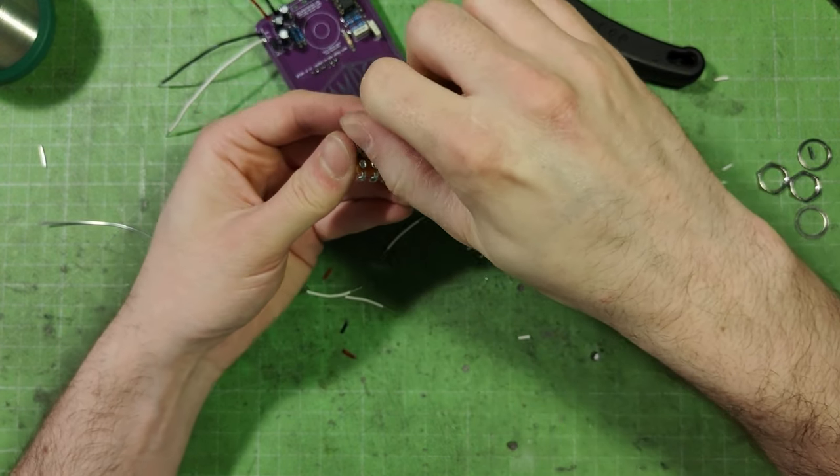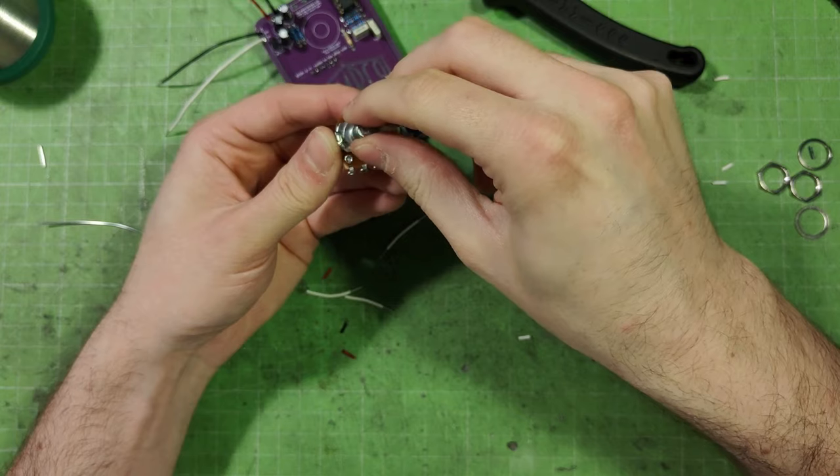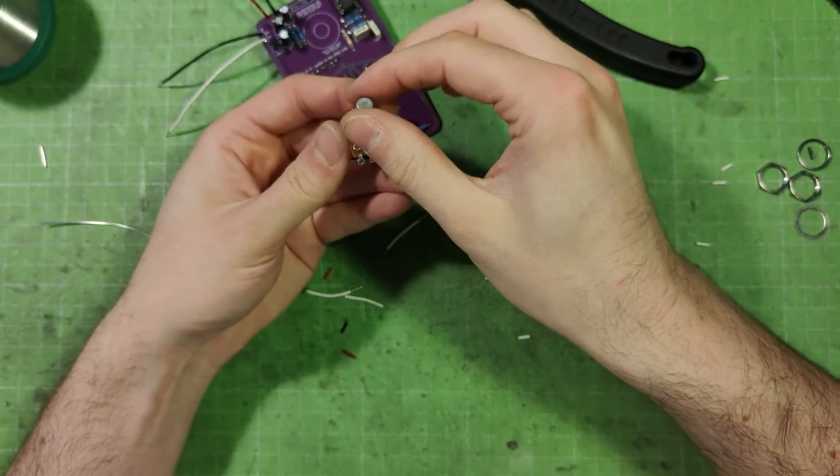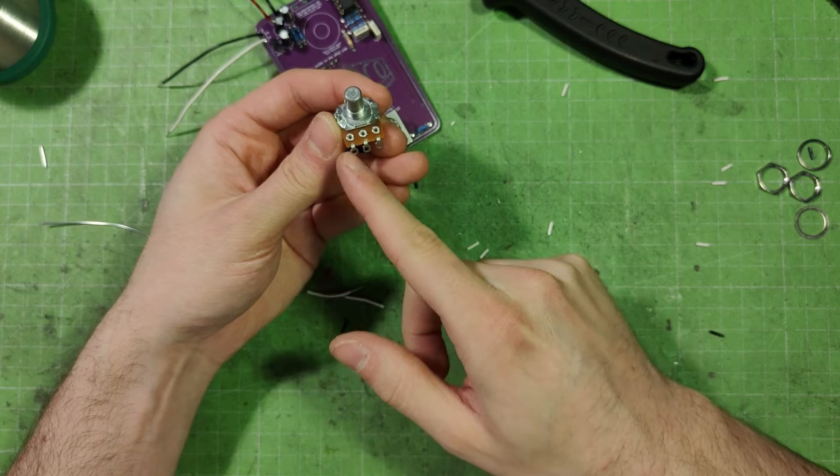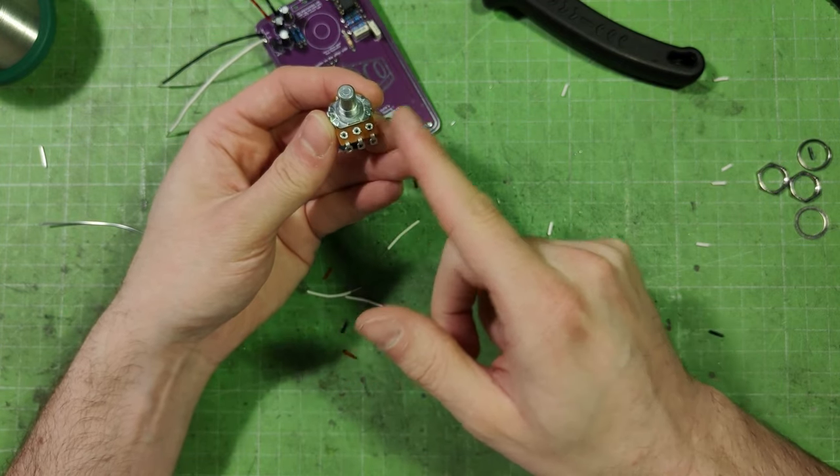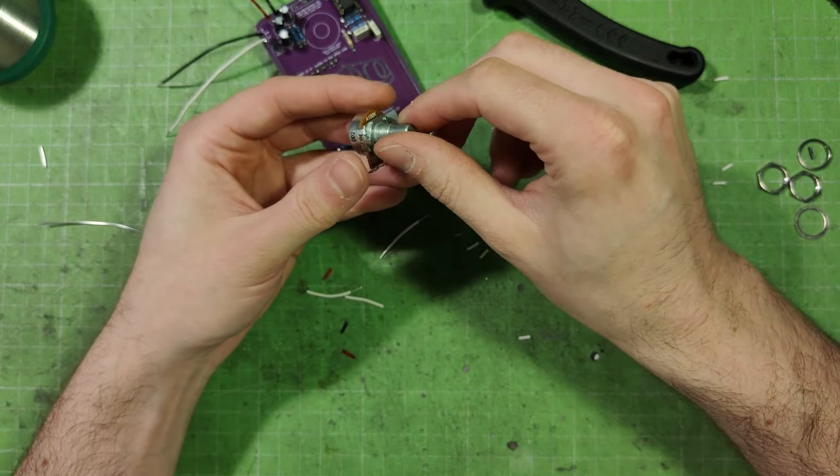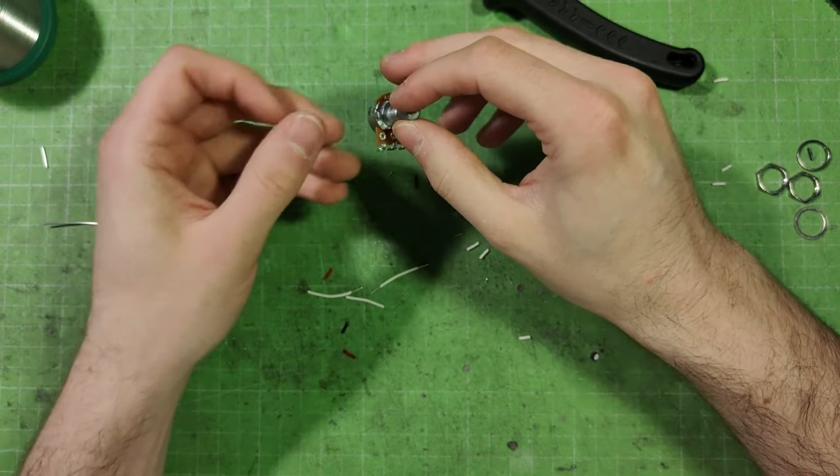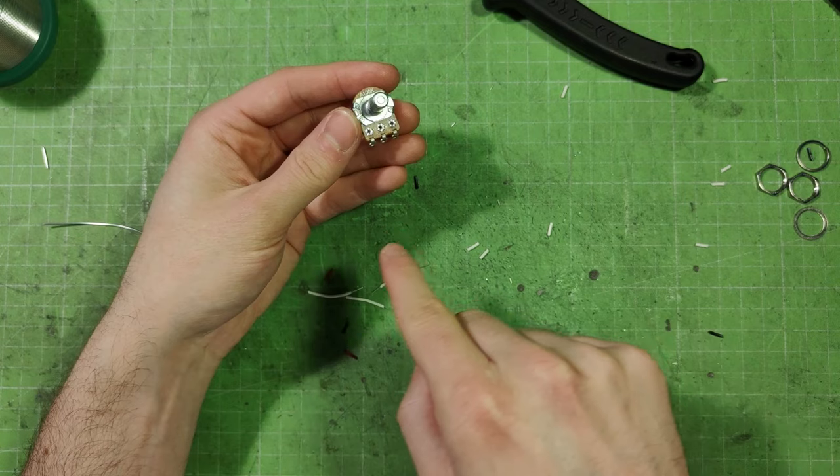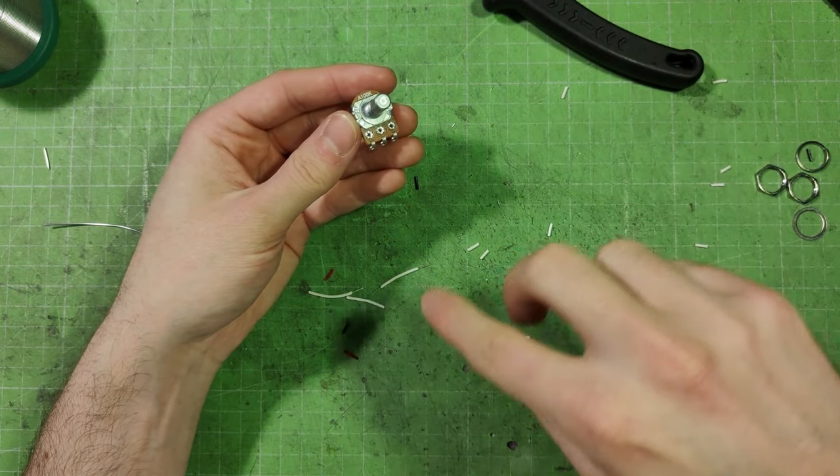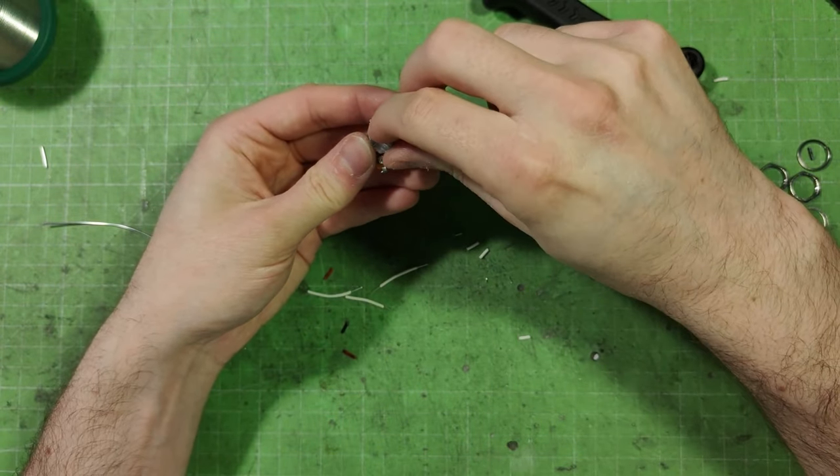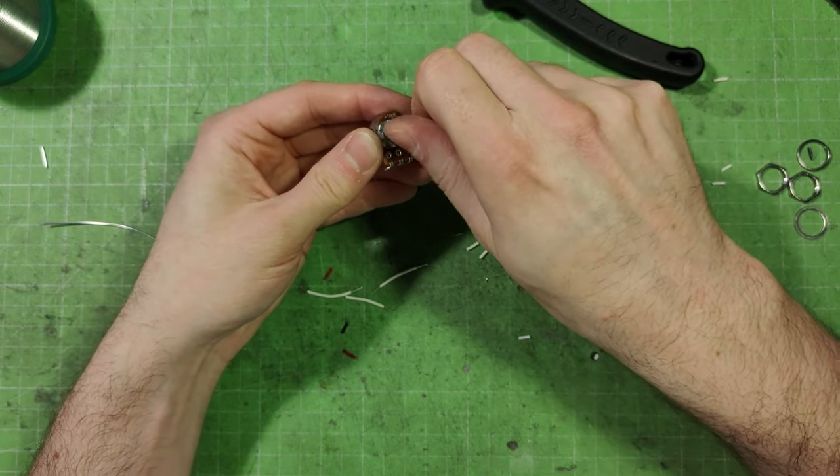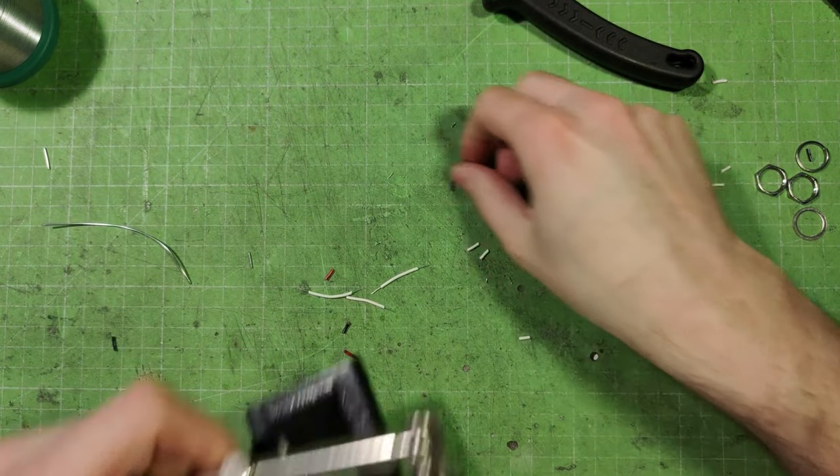If it's linear, the pot is written B 100k. In that case, at the midpoint 50%, you have equal resistance from the middle to the left and from the middle to the right. Here it's A 100k, which means it's an audio or logarithmic potentiometer. C stands for reverse log, so it's the same but instead of doing a slope like this, it's doing a slope like this. You have all the resistance happening on the first quarter of the turn instead of having it on the last quarter of the turn. Just use the right one.